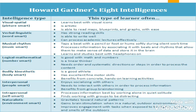The visual or spatial intelligent person learns best with visual icons, is artistic, and is able to read maps, blueprints, and graphs with ease. The verbal linguistic intelligent person will often have strong reading skills, is able to write well, and can process academic lectures effectively. The musical or rhythm-smart intelligent person will tap a pencil or foot, hum softly during silent work time, and processes information by associating it with beats and rhythm that allows them to make sense of data and store it in the brain.